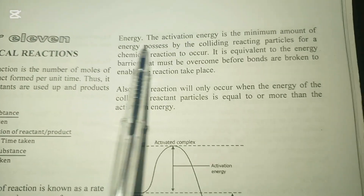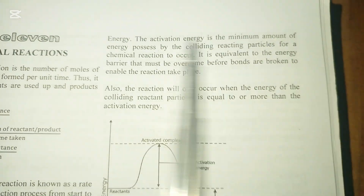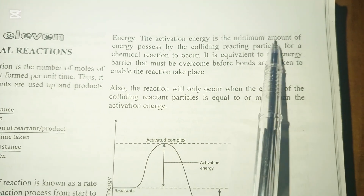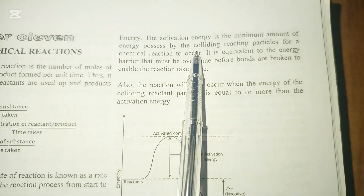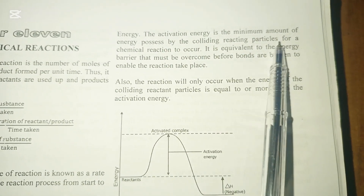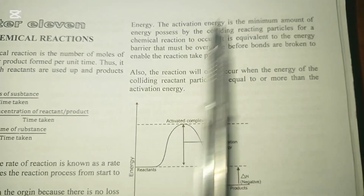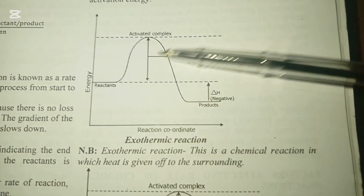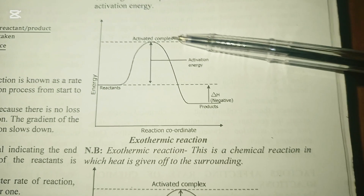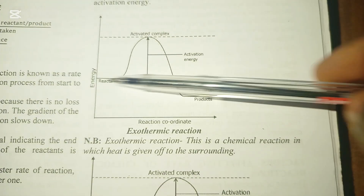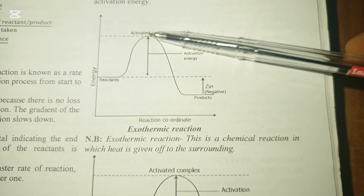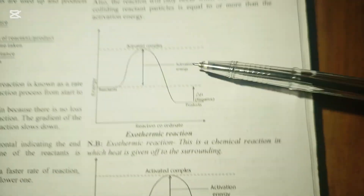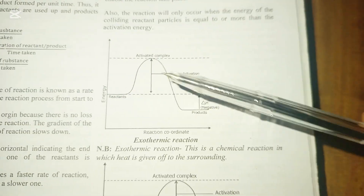For a chemical reaction to occur, the colliding reactants must possess a certain amount of energy. The energy they must possess for an effective collision is called activation energy — it is the minimum amount of energy possessed by the colliding reactant particles for a reaction to occur. This is equivalent to the energy barrier. The activated complex is at the top, and activation energy is the difference between the level of the reactants and the activated complex.